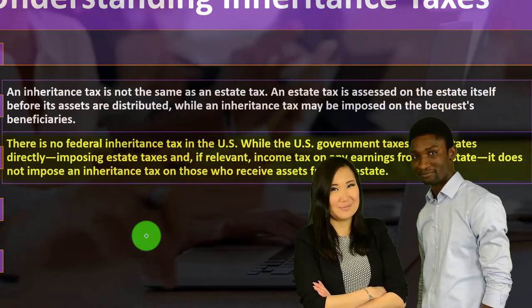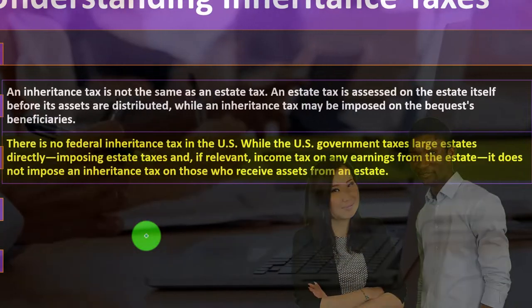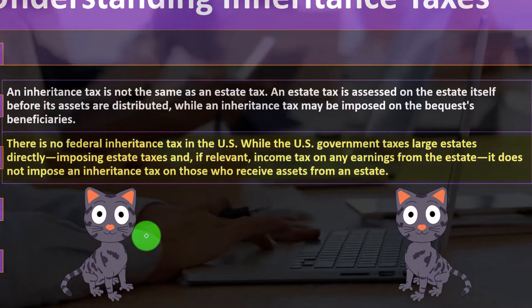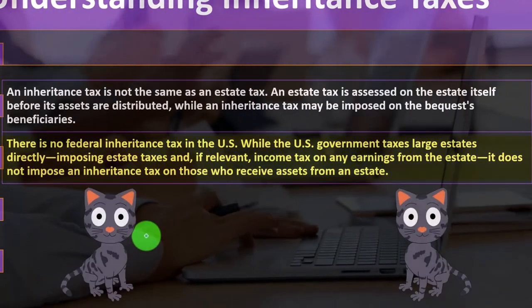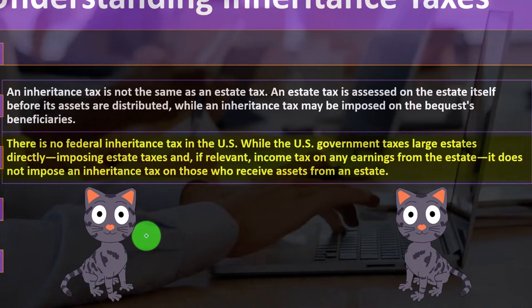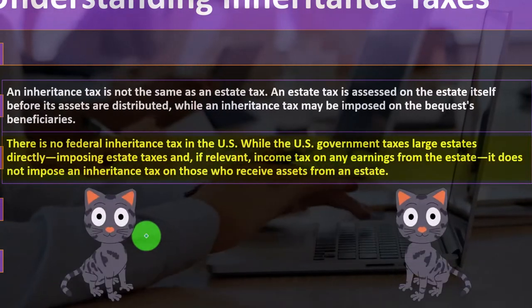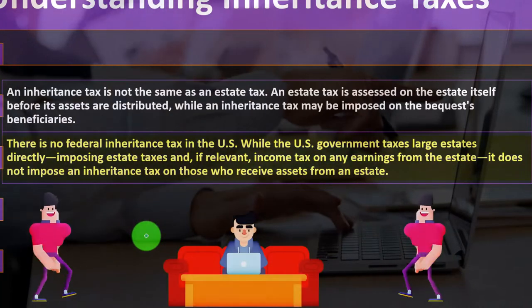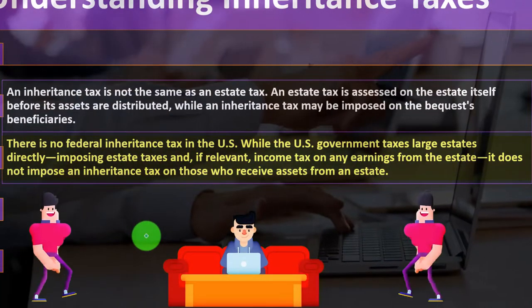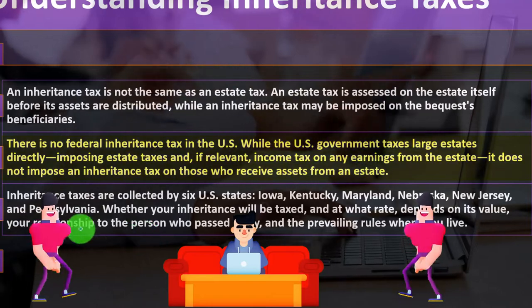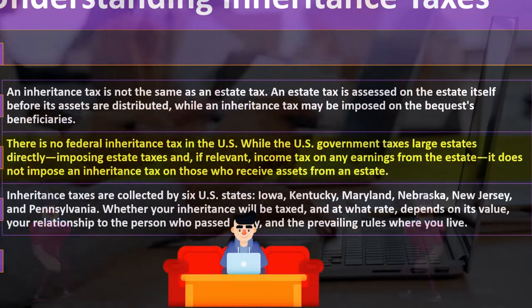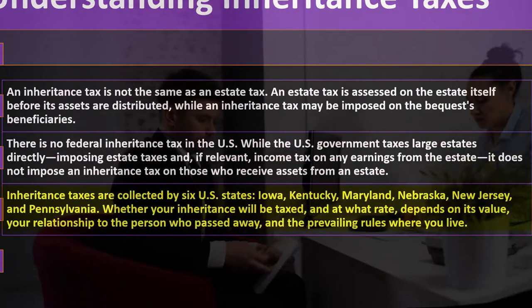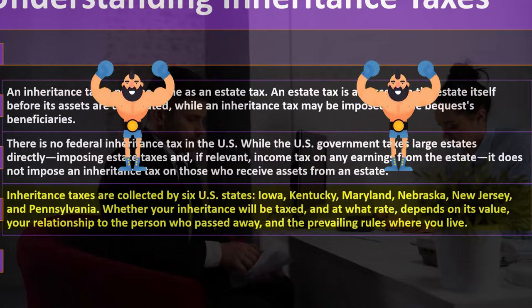There is no federal inheritance tax in the US. While the US government taxes large estates directly — imposing estate taxes and, if relevant, income tax on any earnings from the estate — it does not impose an inheritance tax on those who receive assets from an estate. You wouldn't do both, because taxing the balance sheet and then the recipients afterward seems like double taxation.